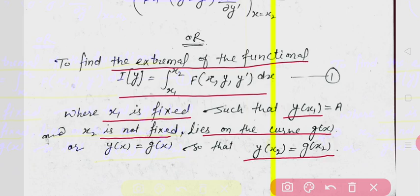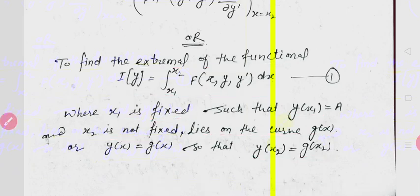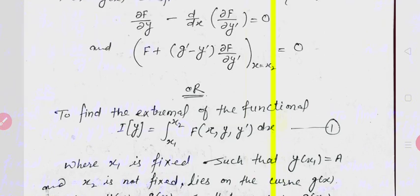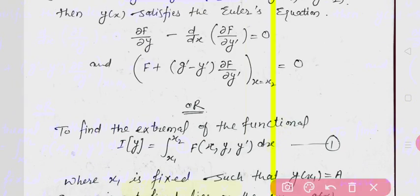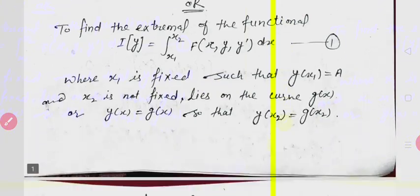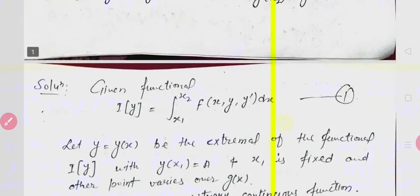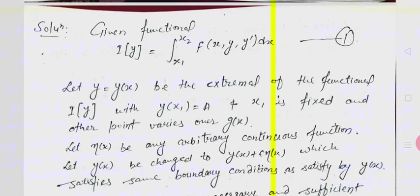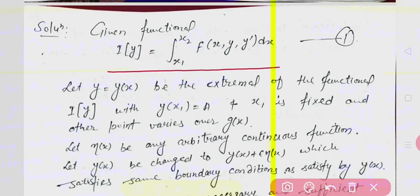So let us talk about the proof. To find the extremum y, we need both conditions to hold. First of all, the given functional is I[y] = integral from x1 to x2 of f(x, y, y') dx.